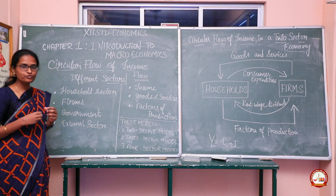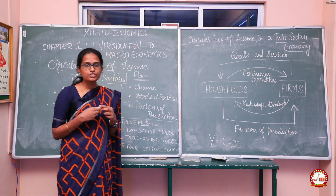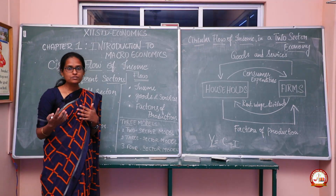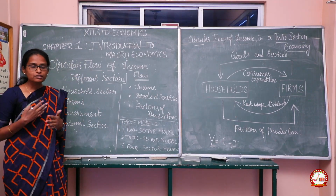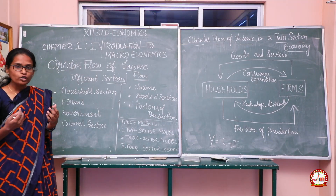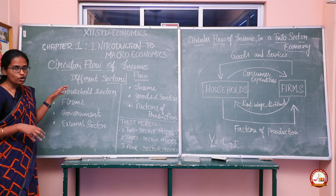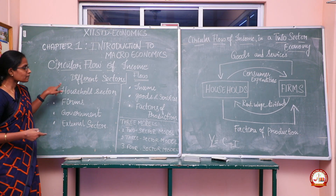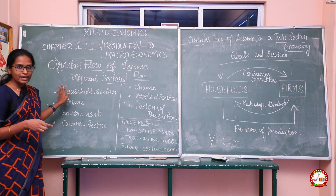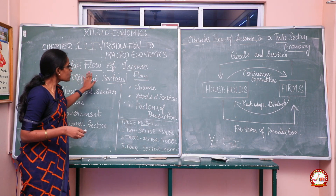Circular flow of income is a circular model of economics used by most economists to represent major economic systems — how they flow in a circular way and what sectors are involved. The sectors involved in circular flow of income are the household sector, firm, government, and external sectors. These four sectors play a major role in the circular flow of income model.